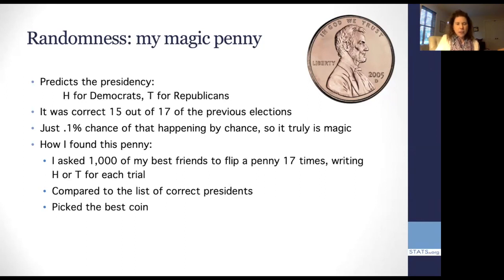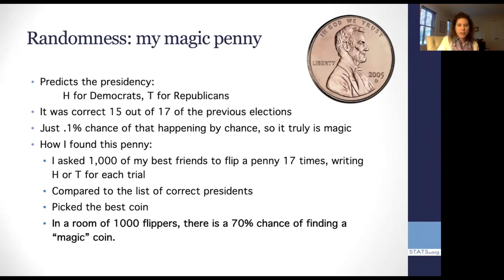Now that seems like a reasonable thing to do. And as you might suspect, that means that it's much more likely I'll have a penny that's magic. The way this one was, instead of it being a 0.1% chance of getting 15 out of 17 of these previous elections, in fact, in a room of a thousand flippers, there's actually a 70% chance of finding such a magic coin. Now, why is this important? Because when we do any kind of scientific work, such as trying to prove that a vaccine works or that a medicine works, we have to be sure that this is something that's extremely unlikely to happen if it were only chance working behind the scenes. We need to know how random this works.